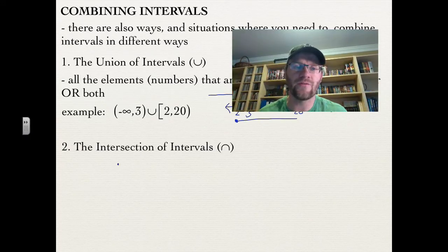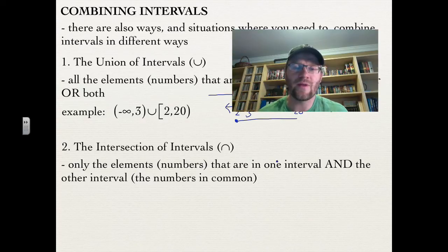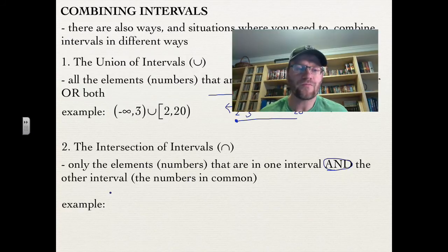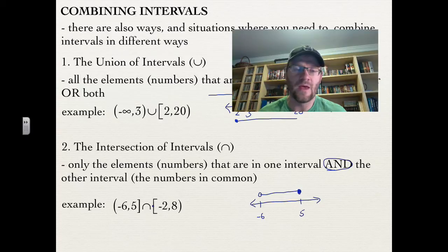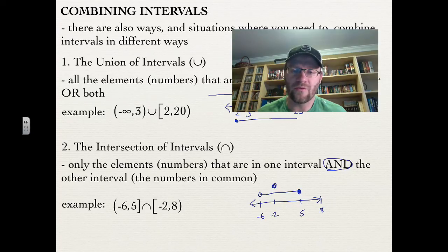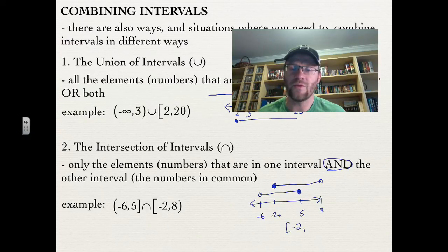The second way is the intersection of intervals — represented by an upside-down U, like an N — which gives the elements in both intervals, meaning numbers in common. For negative 6 to 5 and negative 2 to 8: on a number line, negative 6 to 5 has a closed circle at negative 6 and open at 5, while negative 2 to 8 has a closed circle at negative 2 and open at 8. The overlapping part gives us negative 2 with a closed bracket all the way to 5 with a closed bracket.